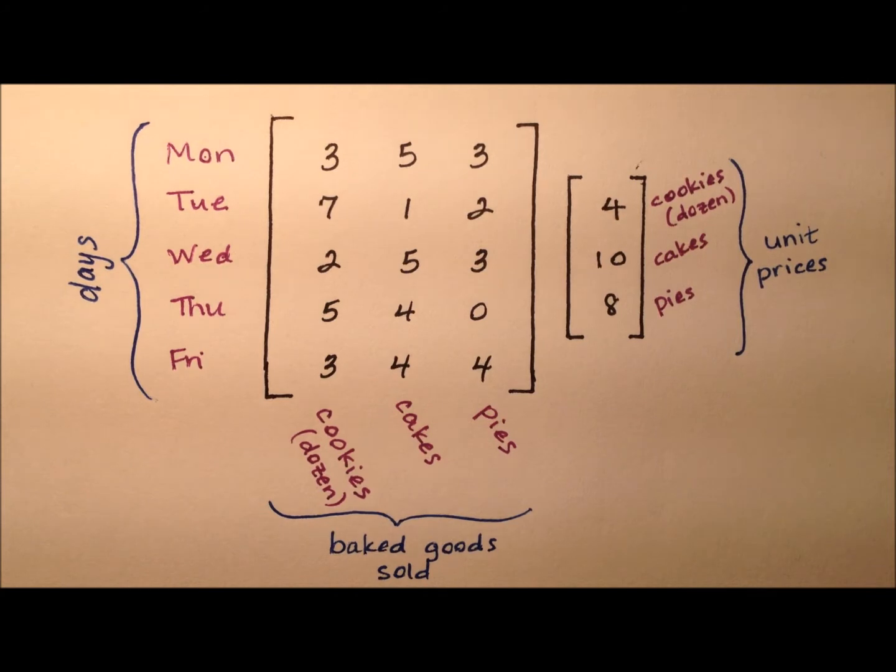In this example, a student, we'll call her Julie, is selling cookies, cakes, and pies for a bake sale. And she records her sales during a five-day period, Monday through Friday. At the end of the week, she can use matrix multiplication to see just how much money she earned each day and ultimately get a weekly total.